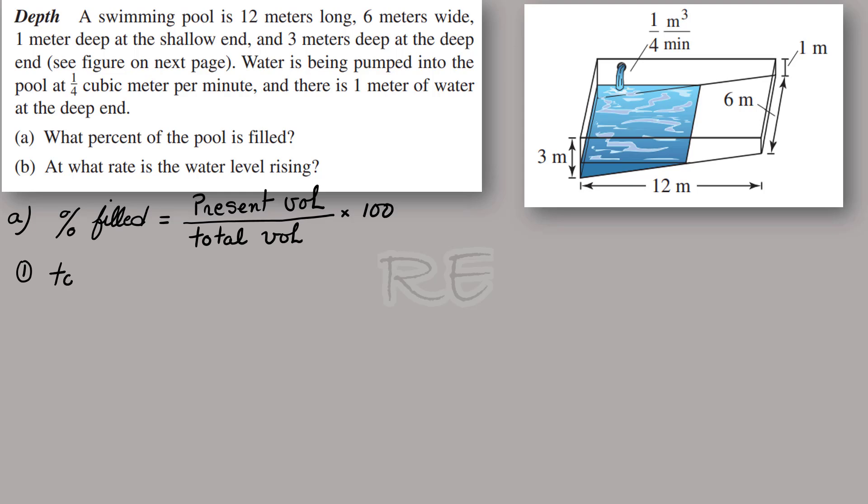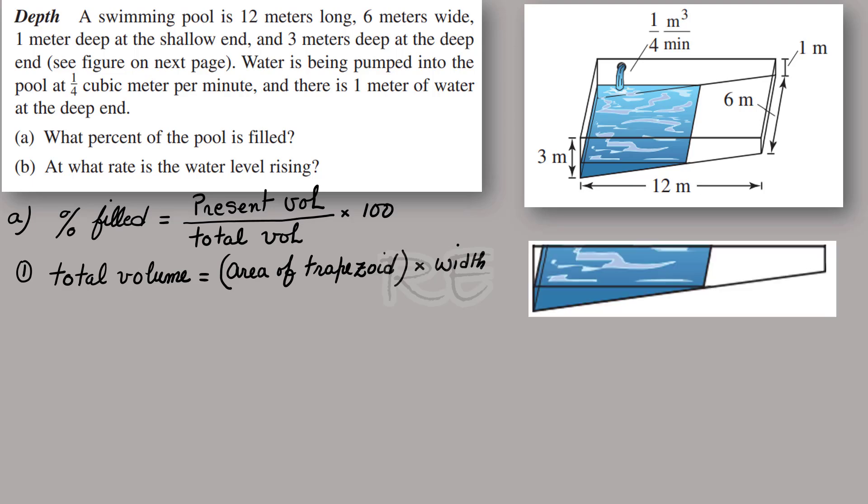If you look at the front of the swimming pool, the total volume should be equal to the area of a trapezoid. The front is a trapezoid stacked vertically along the width, which is 6 meters, so multiply by the width.